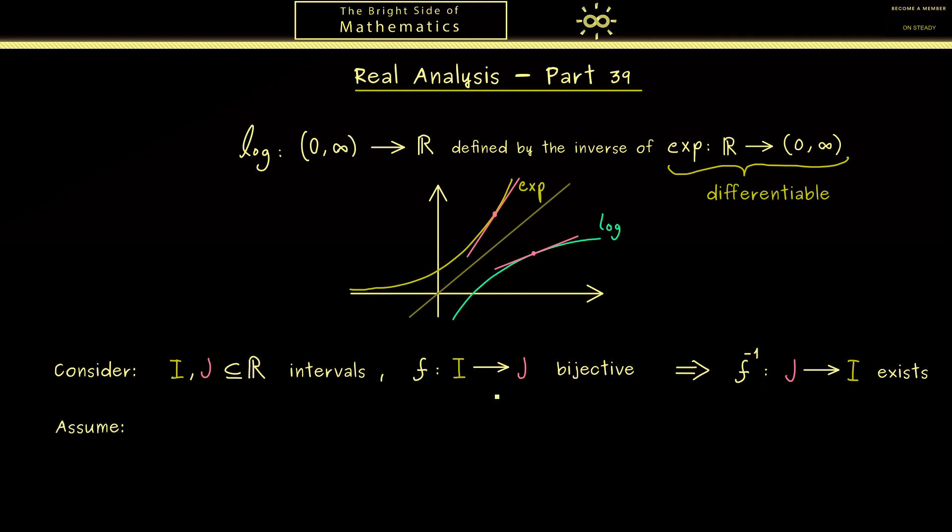Now of course what we have to put in here is the differentiability of the function f at one given point, and as often we call this point x0. However now I also want to put in that the slope at this point is not 0.